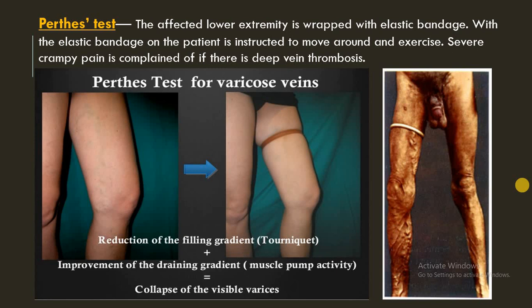The modified Perthes test is primarily intended to determine whether the deep veins are normal or not. A tourniquet is tied in the upper part of the thigh, tight enough to prevent any reflux down the vein. The patient is asked to walk quickly with the tourniquet in place. If the communicating and deep veins are normal, the varicose veins will shrink. If they are blocked, the varicose veins will become more distended, indicating that the communicating and deep veins are affected.